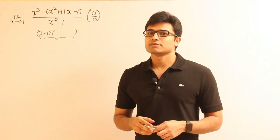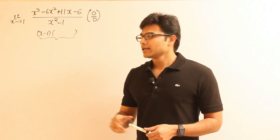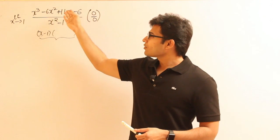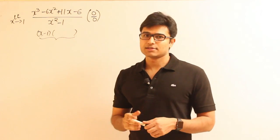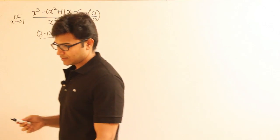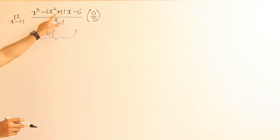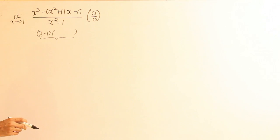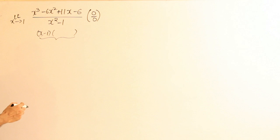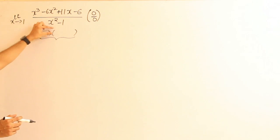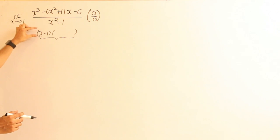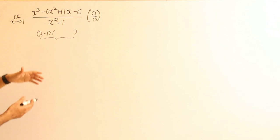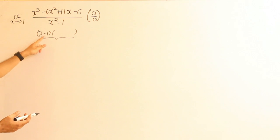Since x minus 1 is a factor in both numerator and denominator, you can write both as a product involving (x minus 1), then cancel them out and find the value. Simply put, you need to write the numerator as (x minus 1) times something. If you can divide it, do that. If you want a simpler way, you can build the entire function using (x minus 1) as a building block, term by term.